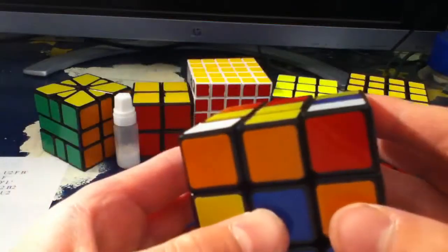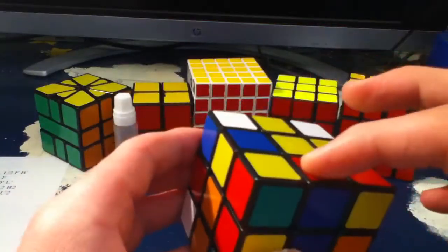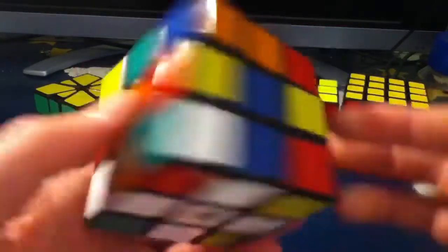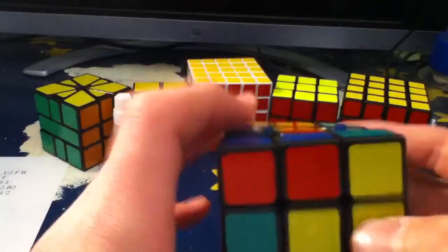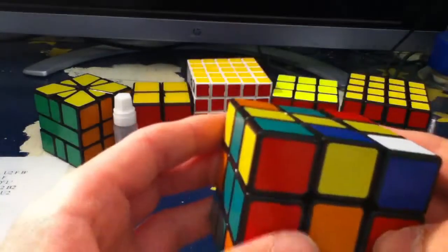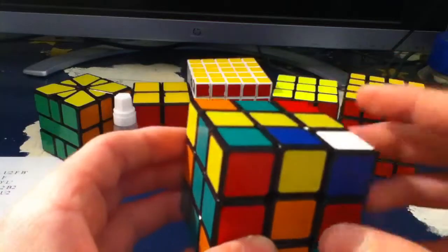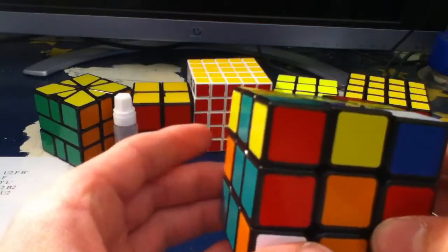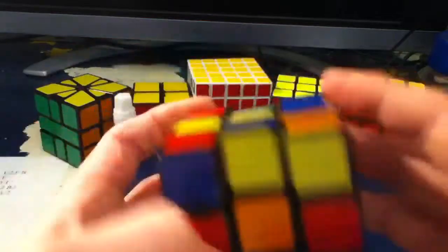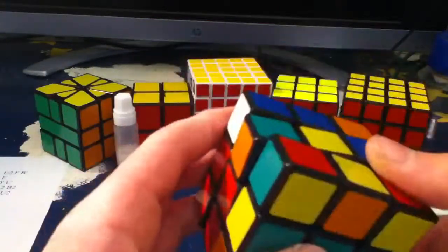So first thing I see is these two, so I'll form them, form the pair, sorry, form the pair and insert it. Next I see we have this corner and this edge.